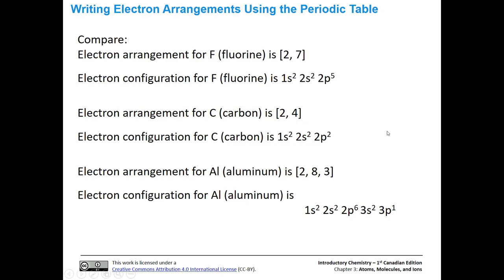Looking at aluminum: the electron configuration shows two for the innermost shell (n=1), eight for n=2 — since n=2 can hold eight electrons total — and the last three are in the n=3 shell. That's why we have three written there. This electron arrangement format is more for introductory chemistry, while the full configuration notation is used in general chemistry.